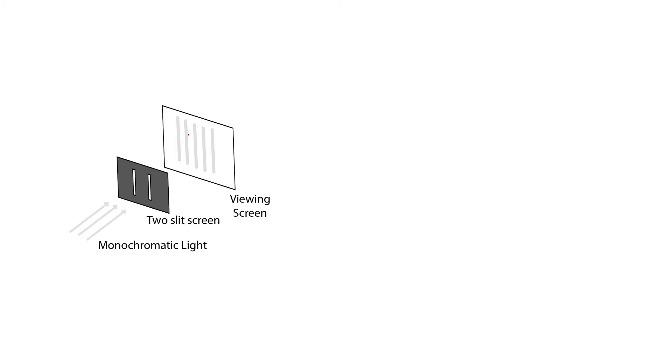But instead of seeing just two bands for each of the two slits, he saw this whole sequence of alternating bright and dark bands, which seemingly came out of nowhere. So how can this be explained?